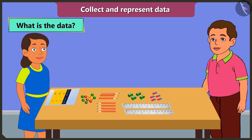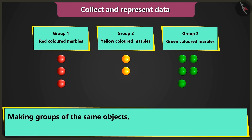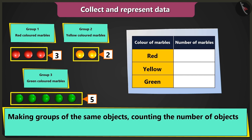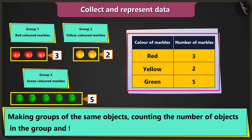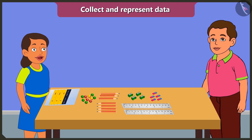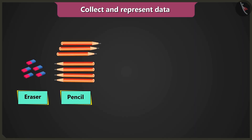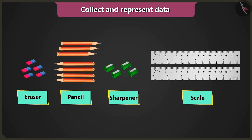Data? What is that? Making groups of similar objects, counting the number of objects in the group, and filling that information in a table is called data. This way I can easily know how many erasers, pencils, sharpeners, and scales do I have.